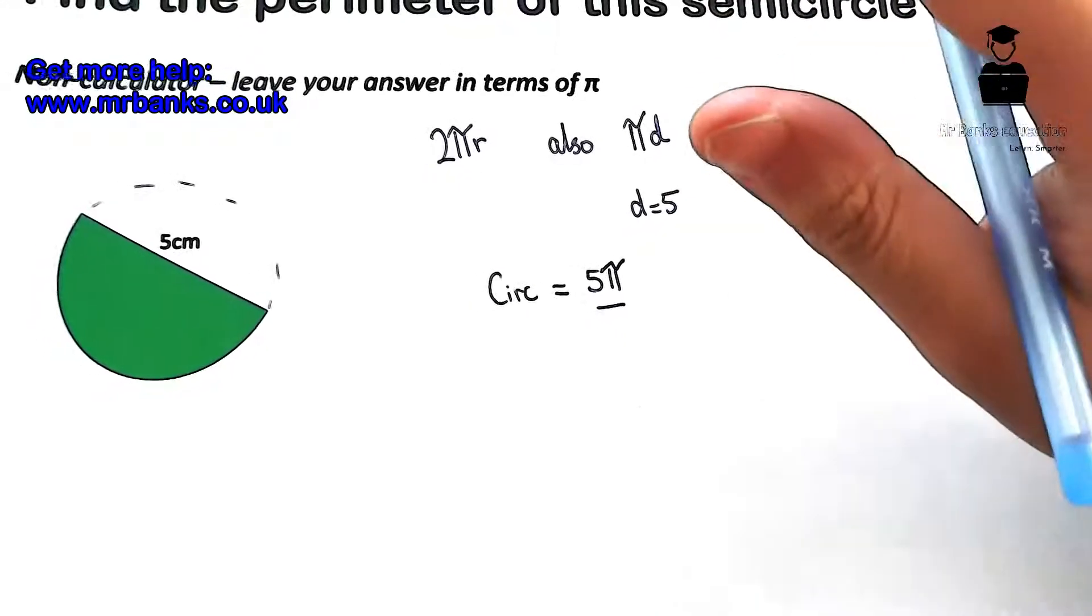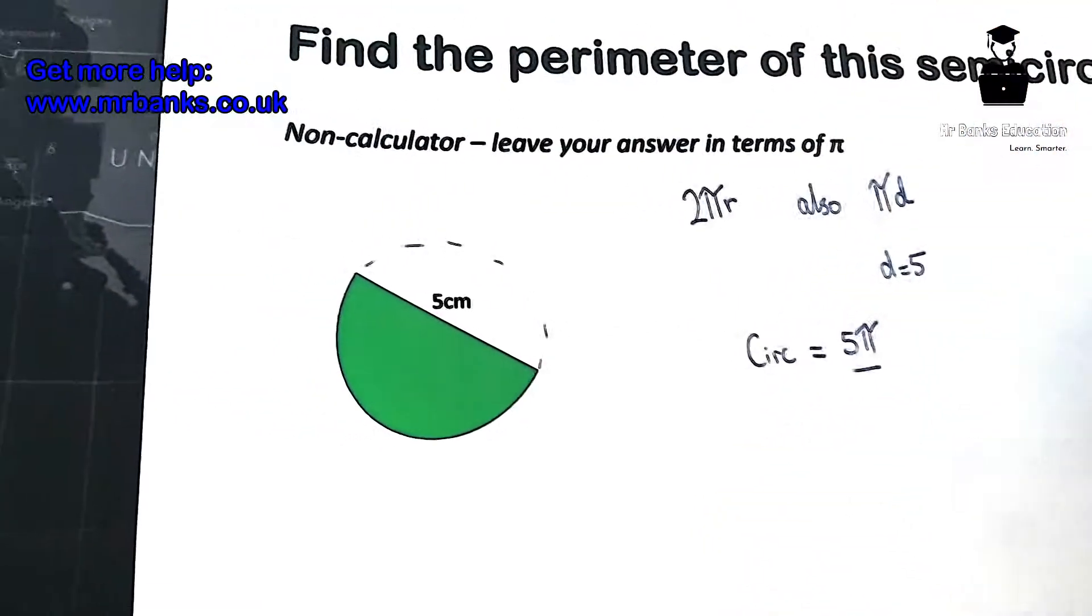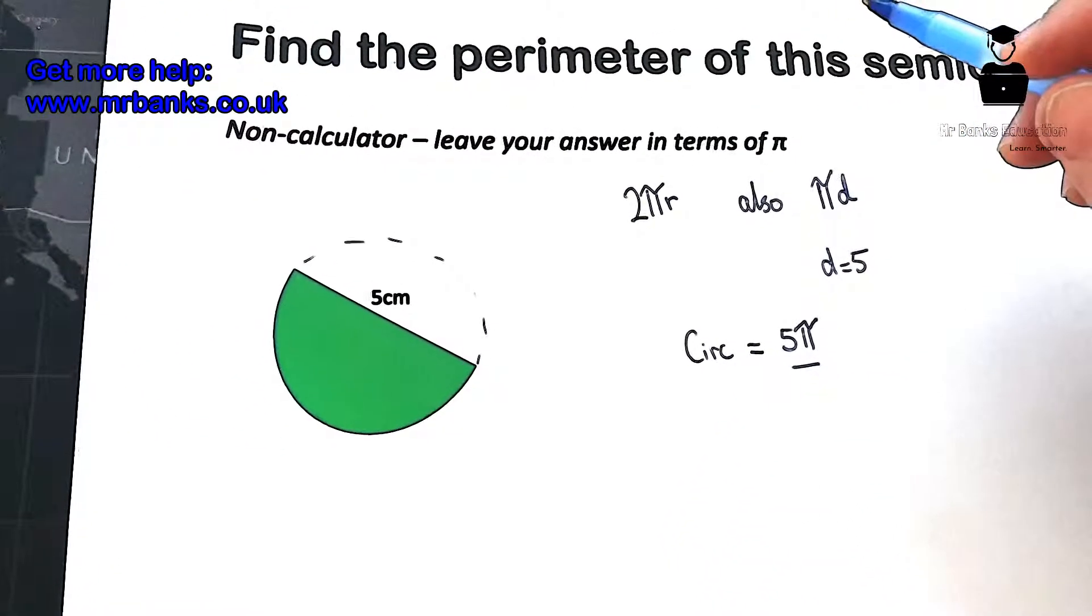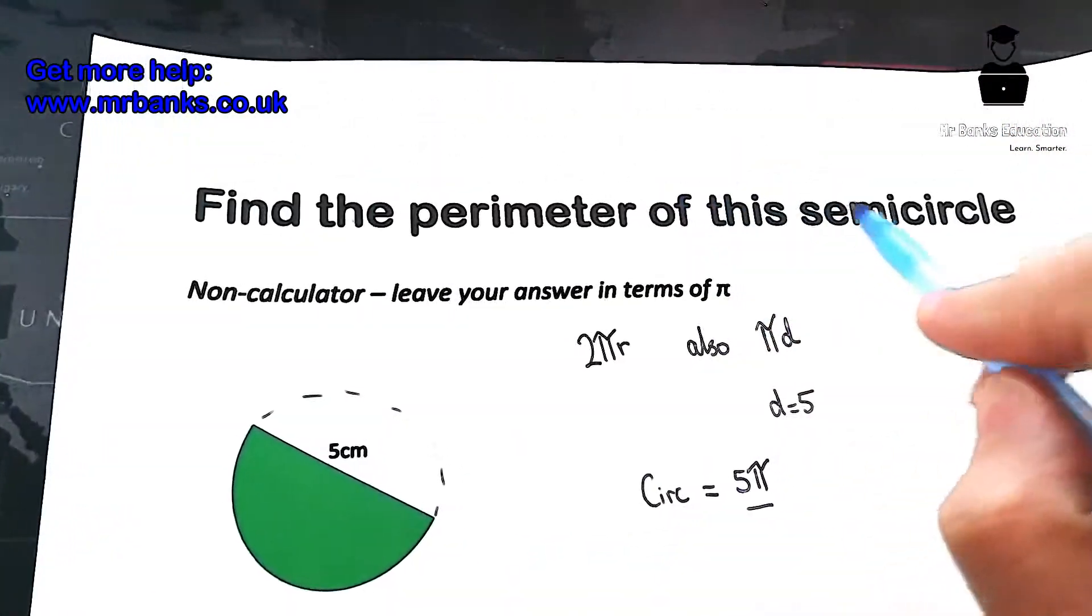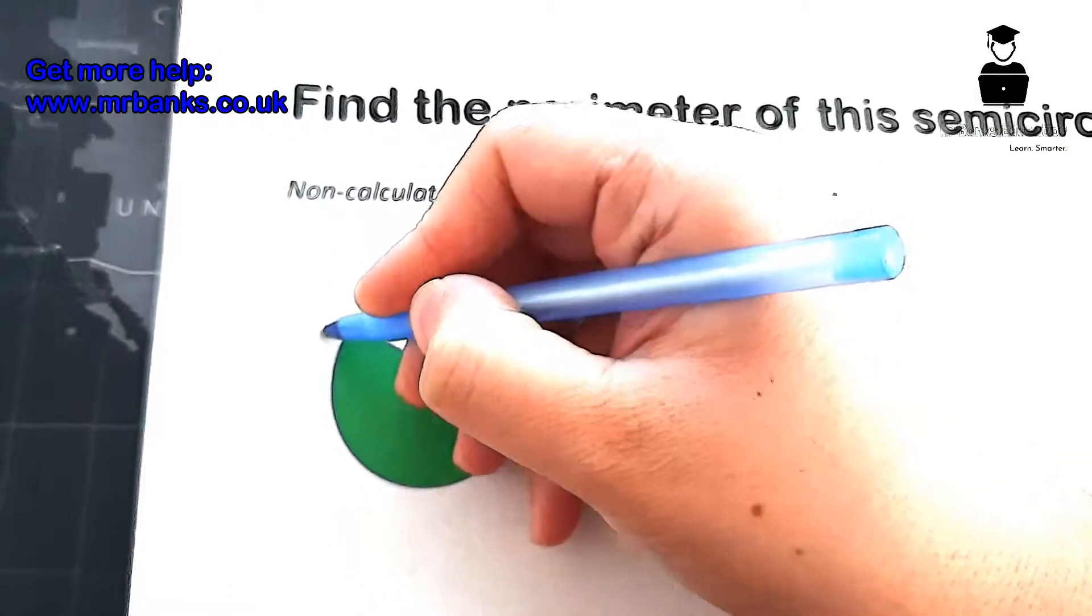The question is asking us to work out the perimeter of the semicircle, so that's this here.